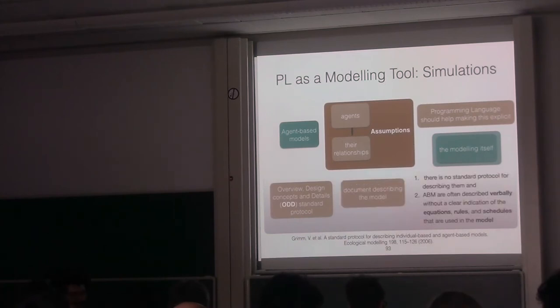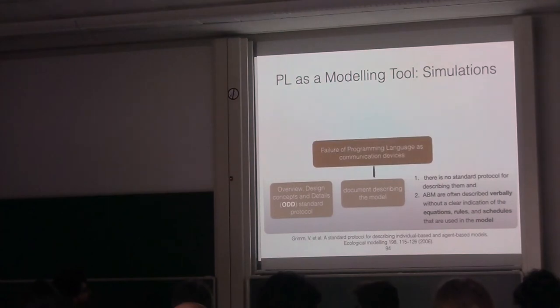Regarding this idea of making things explicit, there exists an Overview Design Detail standard. It's quite old. The idea is, they had a problem that people communicate the models verbally without references to equations, rules and schedules. So they need a document that describes the model. To me this is odd because every model has actually some code, right? It runs some code. So you need a document that describes the code. And maybe this is a failure of programming languages as a communication device, as a way to communicate the model.